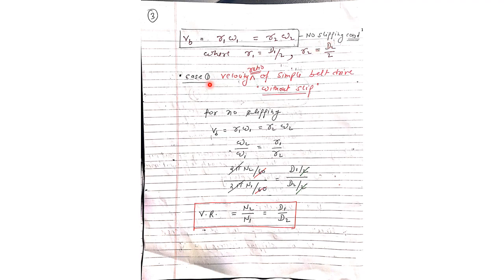There are two cases to find the velocity ratio of a simple belt drive. Case one is without slipping. For the no-slip condition, VB equals R1ω1 equals R2ω2, which gives ω2 by ω1 equals R1 by R2. Substituting ω equals 2πN/60 and R equals D/2, the velocity ratio simplifies to N2 by N1 equals D1 by D2. This formula applies to the without-slip condition.